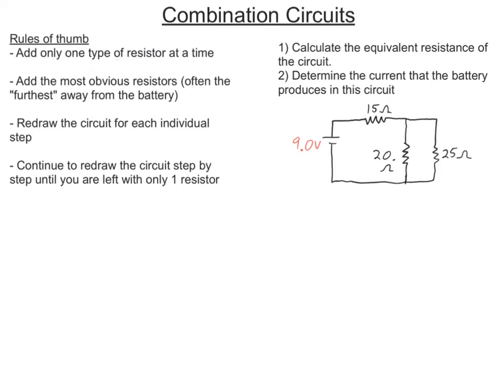Rules of thumb: only add one type of resistor at a time. Don't try to add both parallel and series together at the same time in one equation. Look for the most obvious ones, oftentimes the furthest away. For example, in this circuit over here, these two resistors are in parallel. Those are the two most obvious.